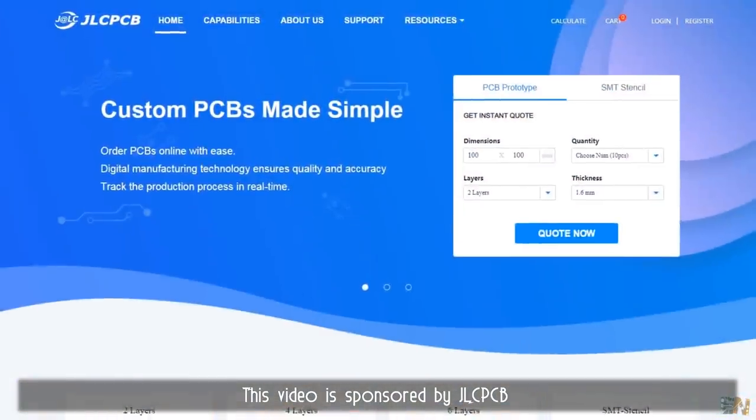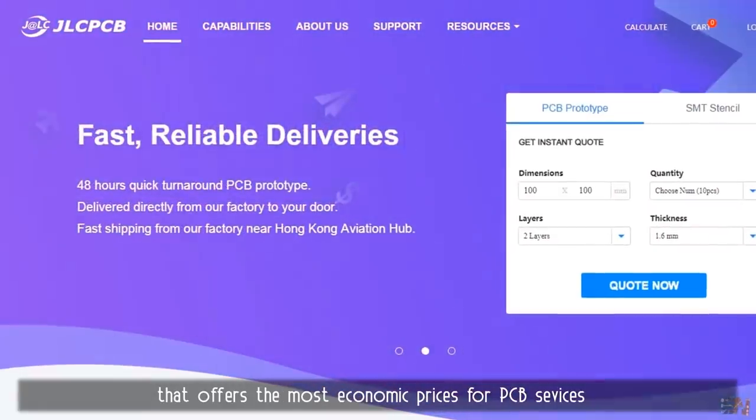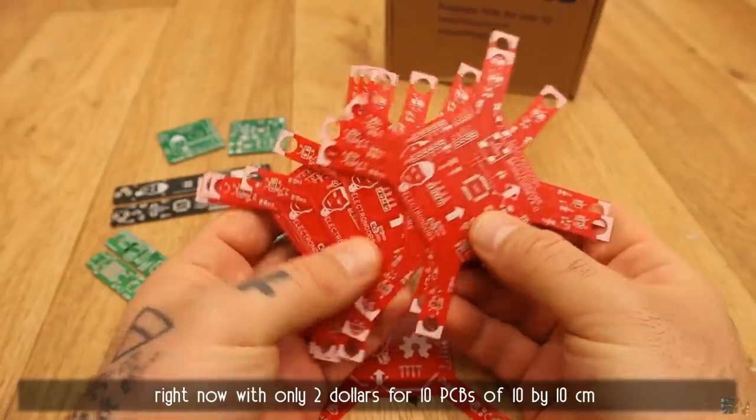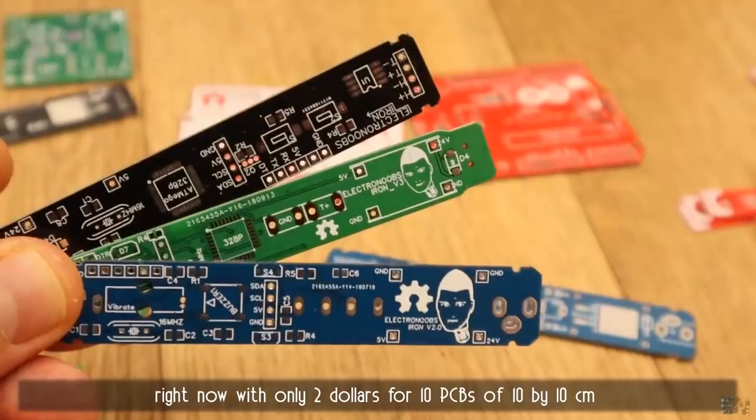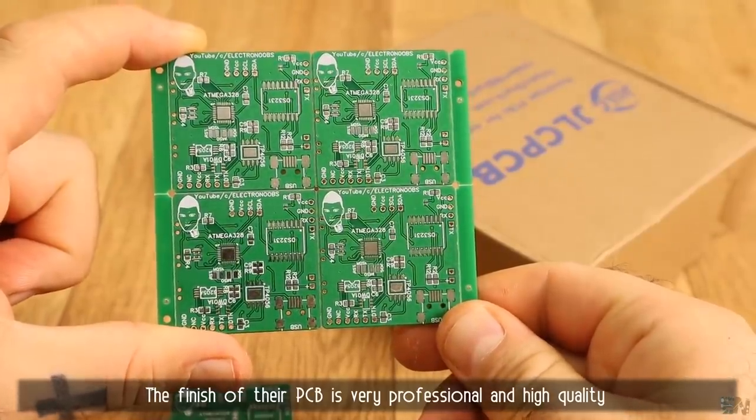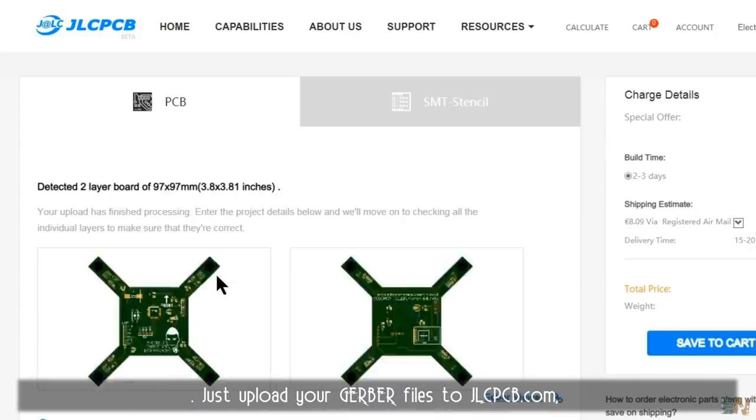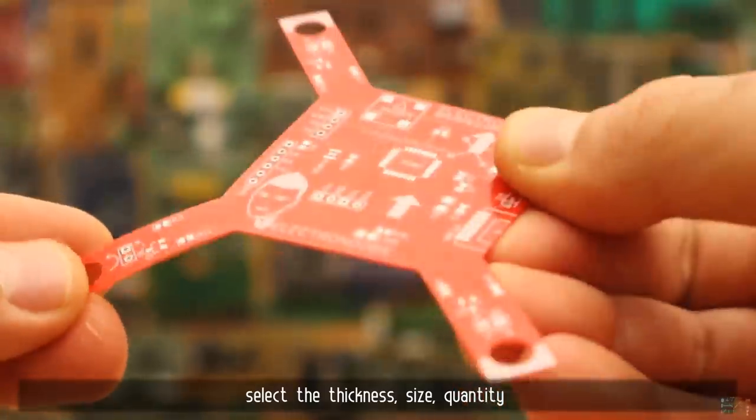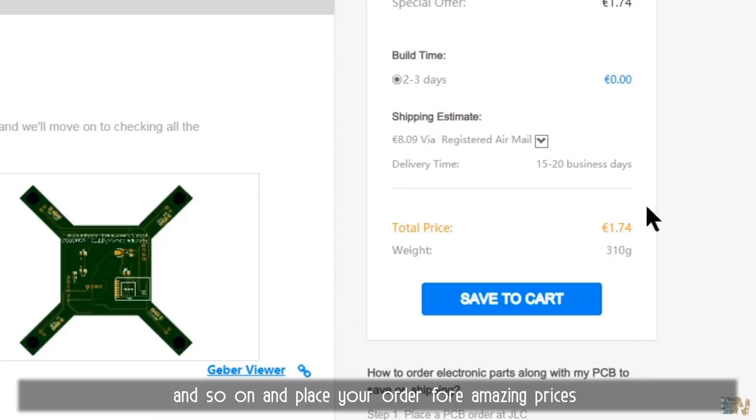This video is sponsored by JLCPCB that offers the most economic prices for PCB services right now with only $2 for 10 PCBs of 10x10 cm. The finish of their PCB is very professional and high quality. So just upload the Gerber files to jlcpcb.com, select the thickness, the size, the quantity and so on and place your order for amazing prices.